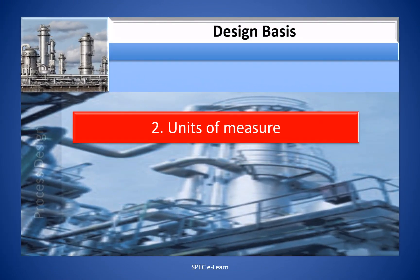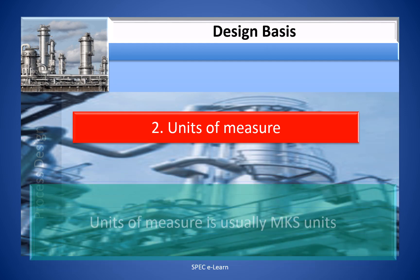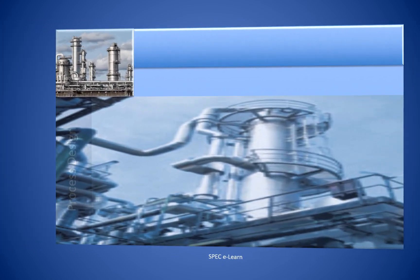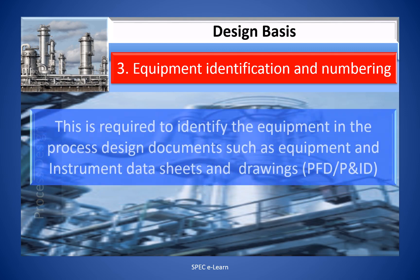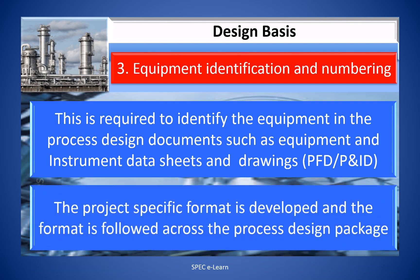Two: Unit of Measure. This relates to the design parameters provided in the design documents. Units are measured usually in MKS units. Three: Equipment Identification and Numbering. This is required to identify the equipment in the process design documents such as equipment and instrument data sheets and drawings like PFD and P&ID. A project-specific format is developed and followed across the process design package.